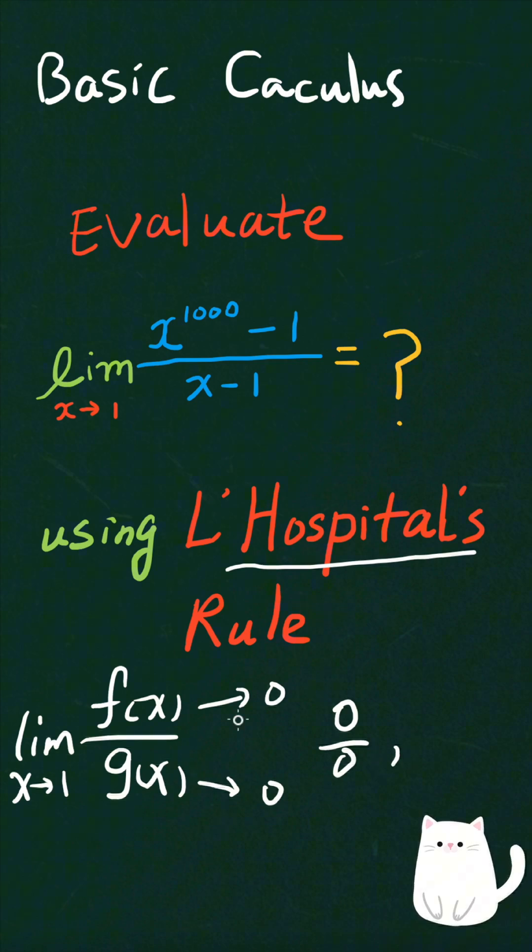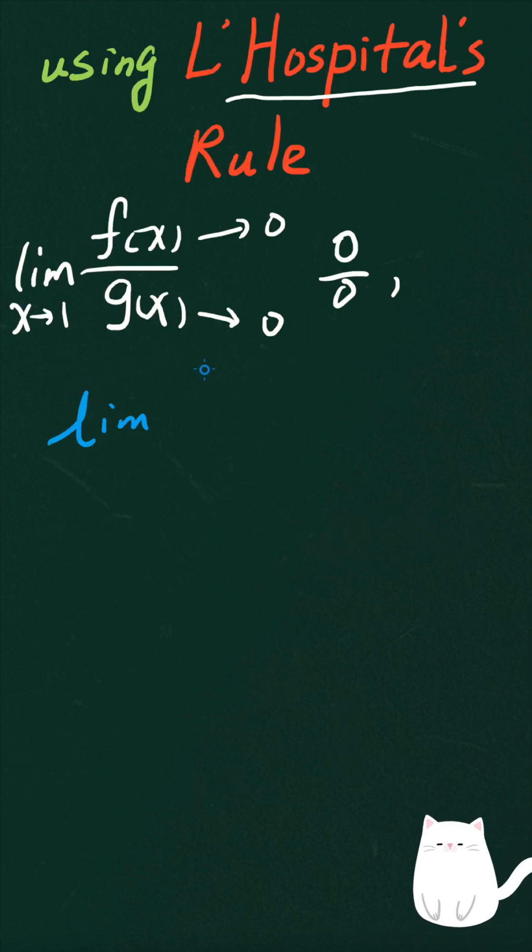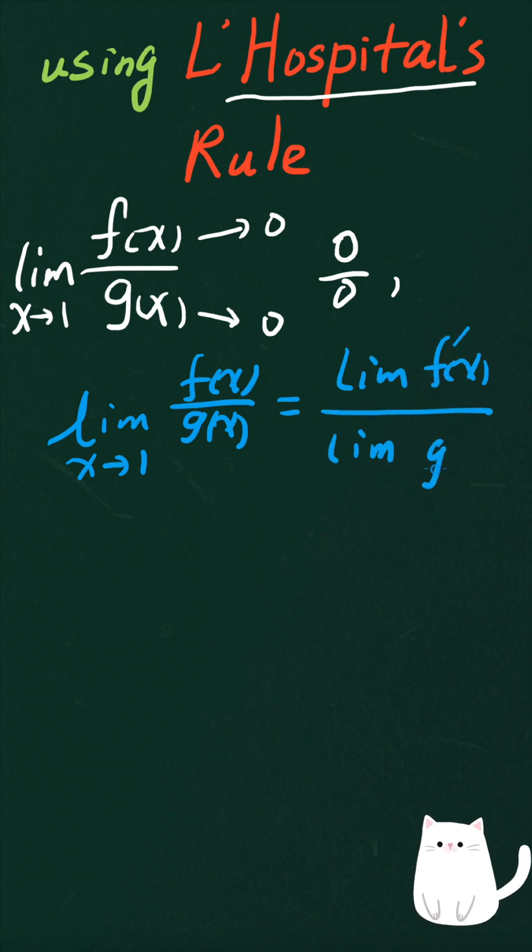All right, so L'Hôpital's Rule says that the limit of fx over gx with such condition, as x approaches a number, in this case 1, then it is equal to the limit of the derivative of fx divided by the limit of the derivative of gx as x approaches 1.